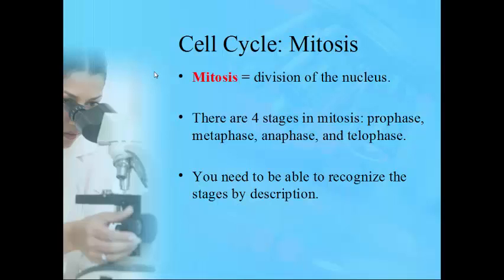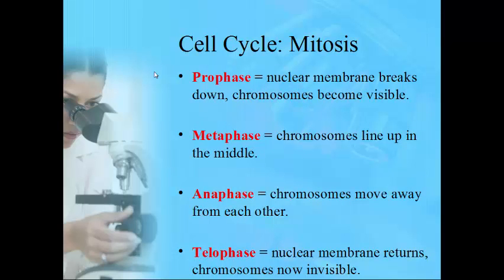Many people misunderstand mitosis — it is the division of the nucleus, not the cell itself. There are four stages within mitosis: prophase, metaphase, anaphase, and telophase. In prophase, the nuclear membrane breaks down and chromosomes where the DNA is found become visible. In metaphase, those chromosomes line up in the middle of the nucleus — M for metaphase, M for middle.